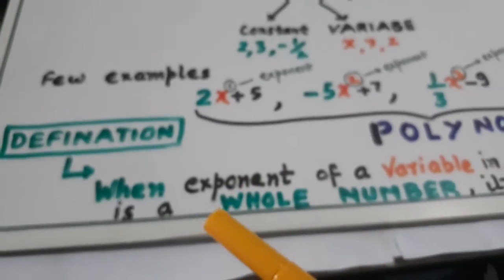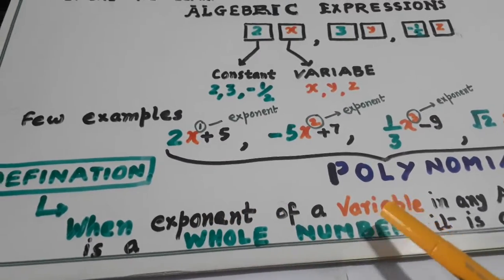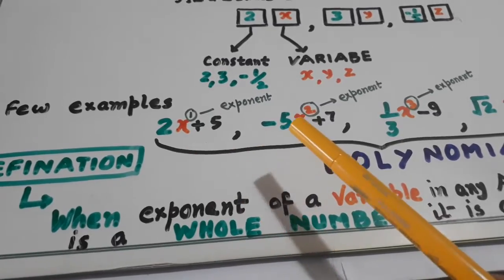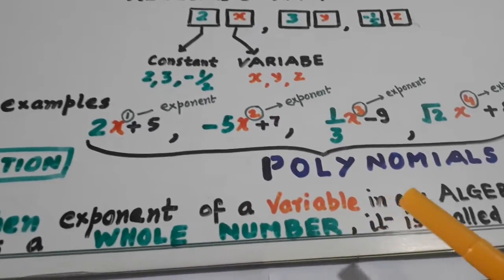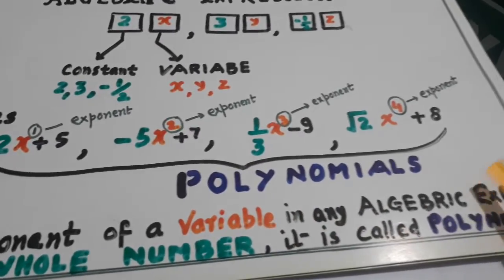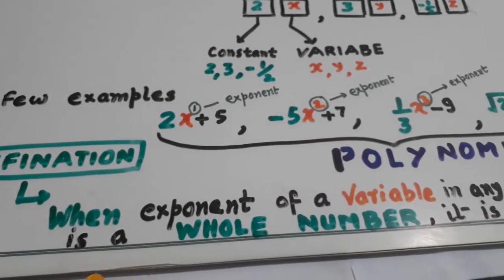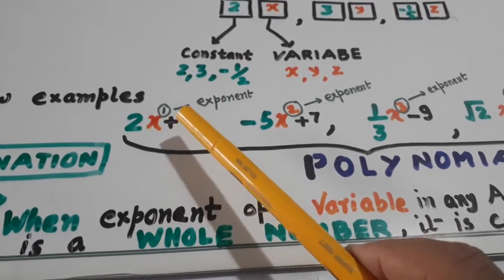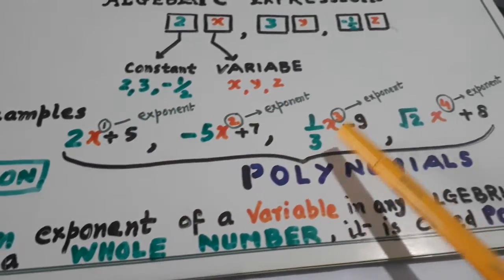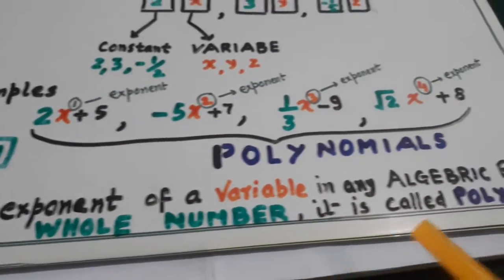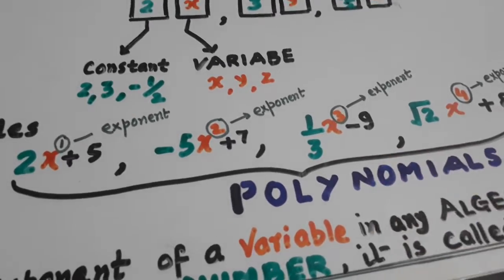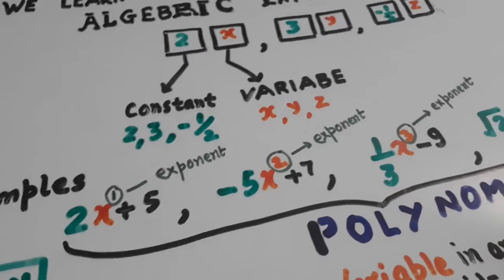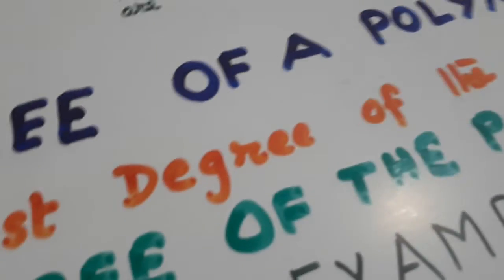Now, definition. When exponent of a variable in any algebraic expression is a whole number, it is called polynomial. Dikhiye, 1, 2, 3, 4 are all whole numbers. You should remember that exponent of a polynomial is always a whole number. Whole number mein zero bhi hota hai, toh constant polynomial kailati hai.